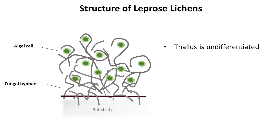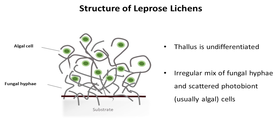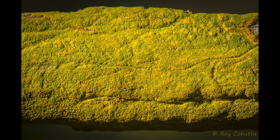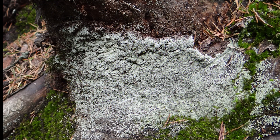Unlike crustose lichens, which have defined layers in their body organization, the thallus of leprose lichens is undifferentiated and looks like a regular mix of fungal hyphae and scattered photobiont cells, lacking a cortex or any organized structure. Morphologically, it is the simplest growth form. This type of lichen is characterized by its powdery or granular appearance, looking like small grains or tiny flakes, and is often found growing on surfaces like rocks, bark, and soil.